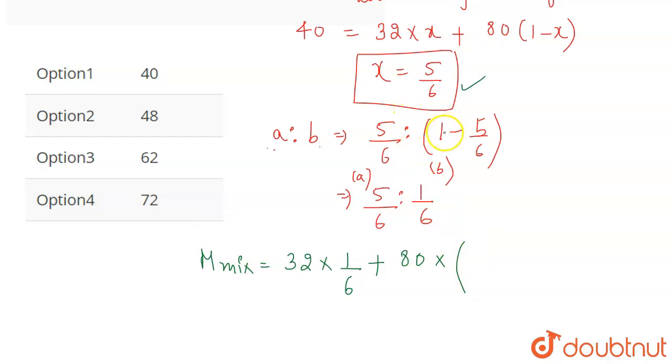Initially it was 1 minus this will be 5 by 6. Because now we have interchanged the values. If initially this was A is to B, we are now mixing it in the ratio of B is to A. So B will be here which is 1 by 6 and A will be here which is 5 by 6. So we will get the molar mass of the mixture equal to 72.